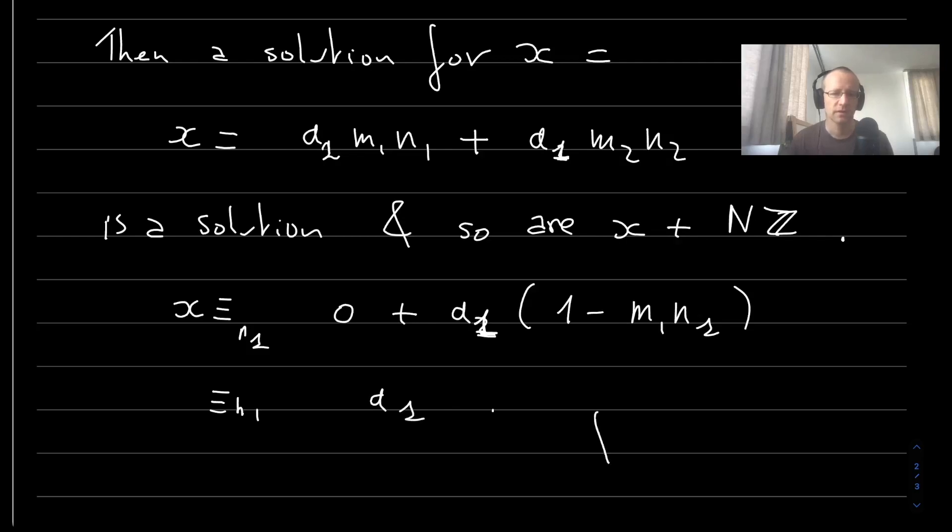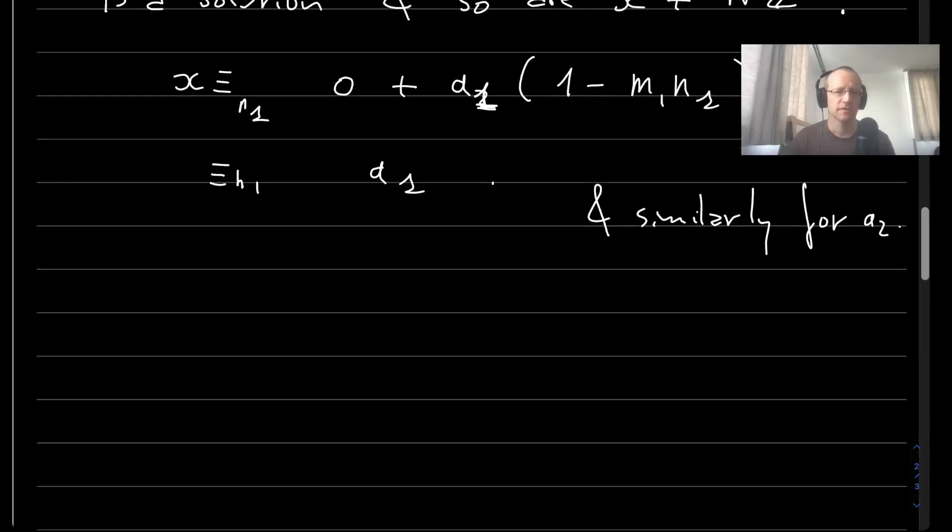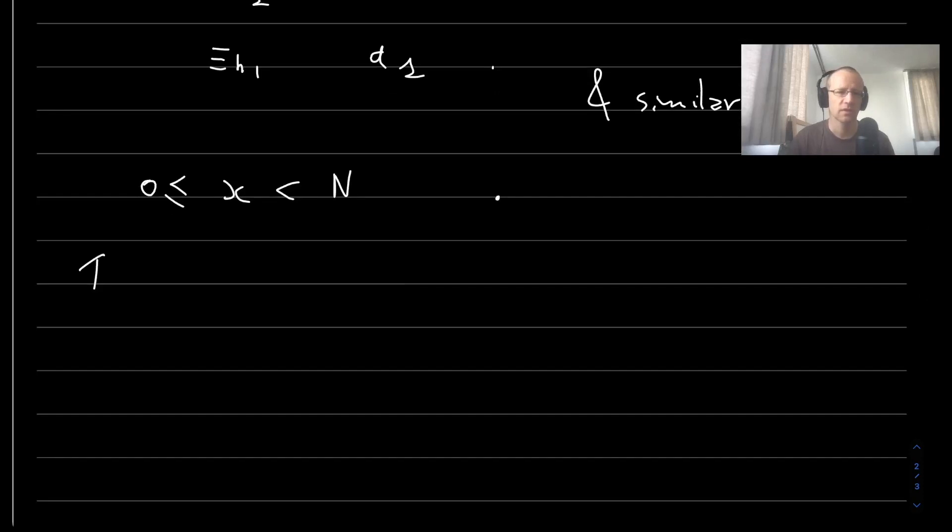And similarly for a_2. Now, this makes it obvious that there is a solution between 0 and n. Because I can bring the solution I gave into this interval, and then it's not difficult to show that this solution is unique. And then by induction, one generalizes this to k n_i.